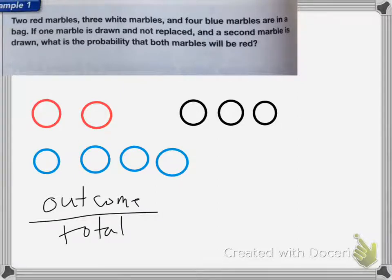Remember, your probability is going to be your outcome over your total, so what you want over the total number of things.